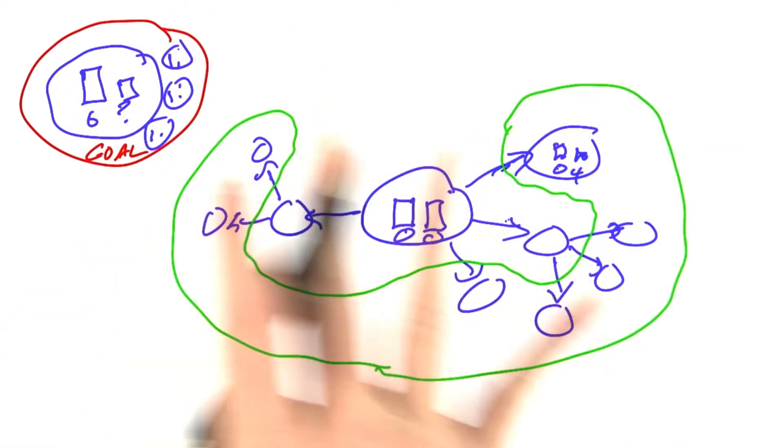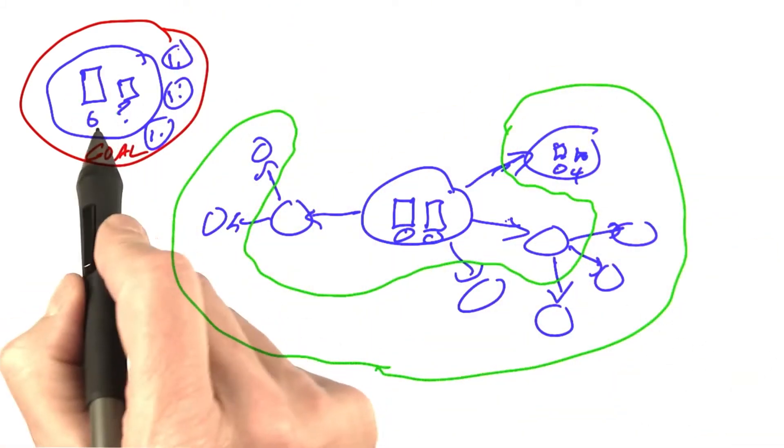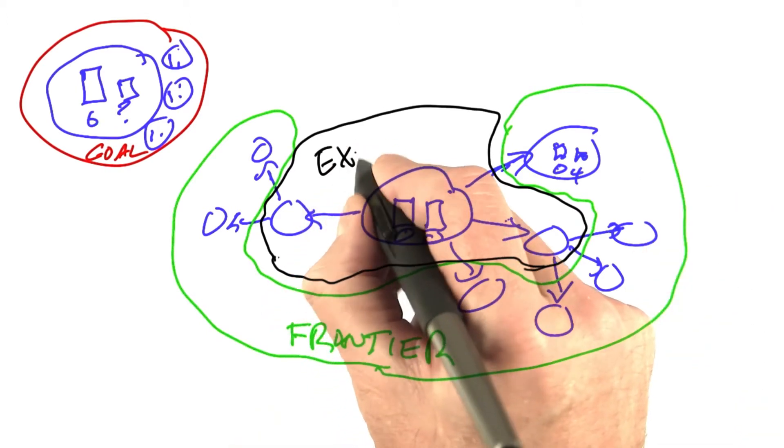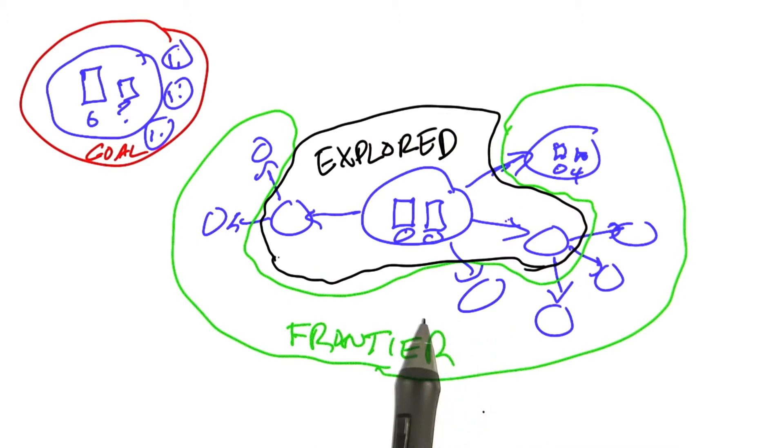We separated the set of all possible states into the goal state, the frontier states, and the previously explored states. Then you can see that the way to make progress is to say, let's take one of the frontier states and expand that.